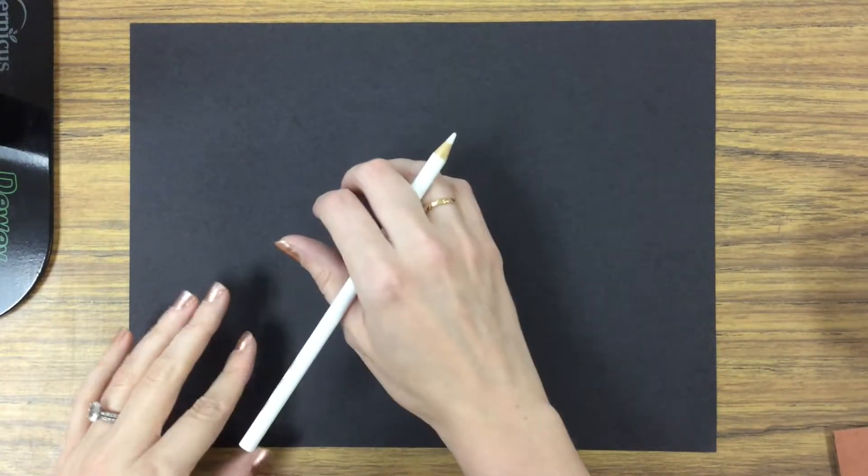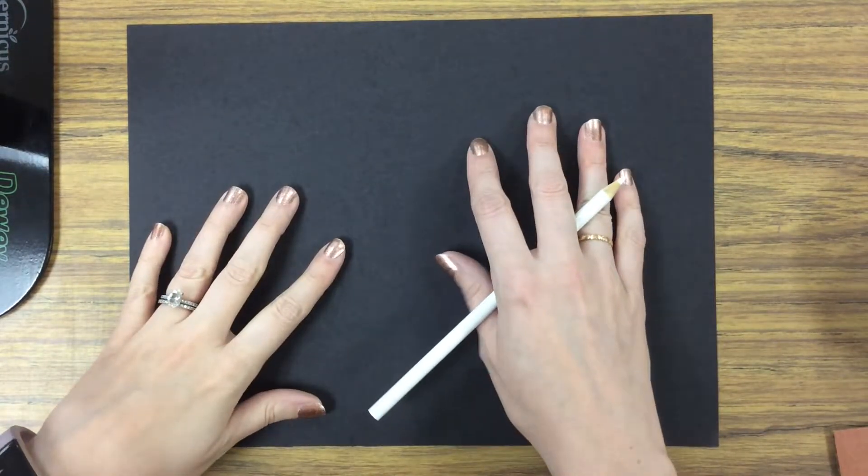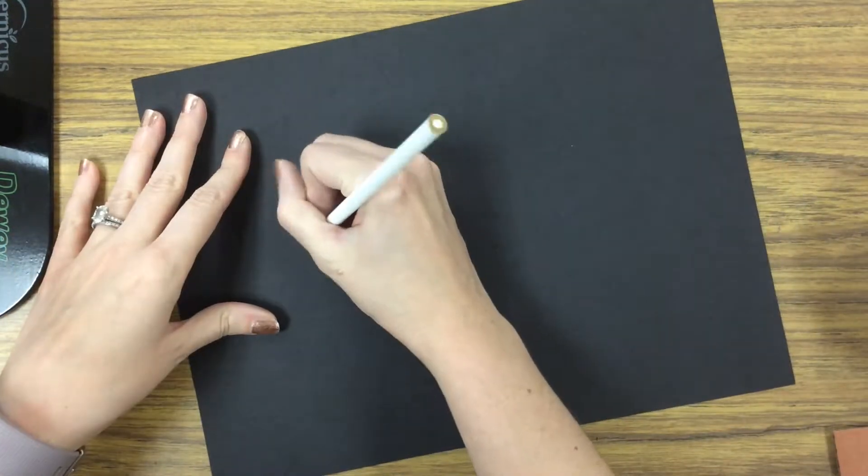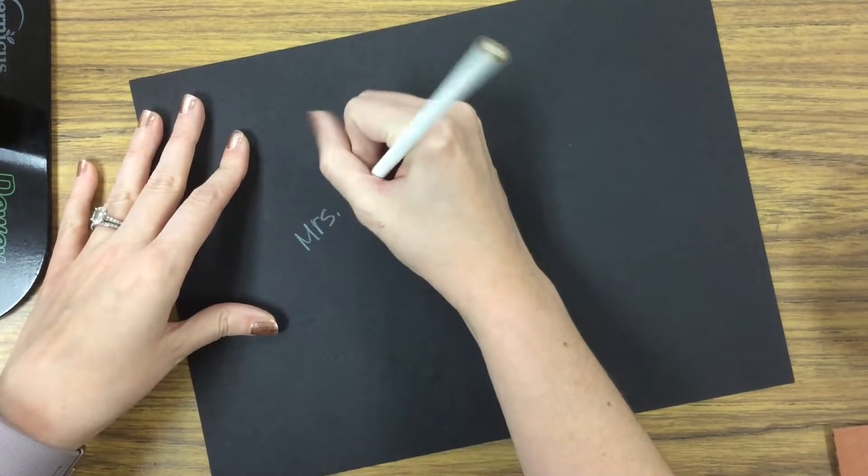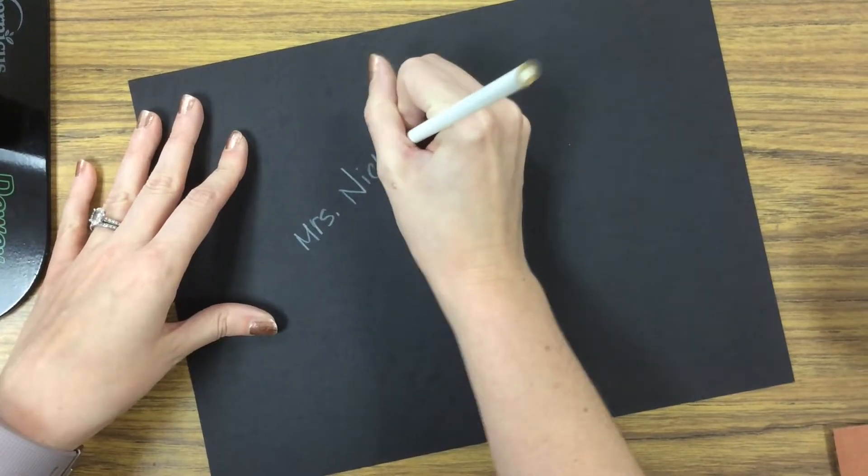To start our geometric printmaking project, we're going to take a white colored pencil with a black sheet of construction paper, flip it to the back, and write our name. We're using white so we can see our name on the black.